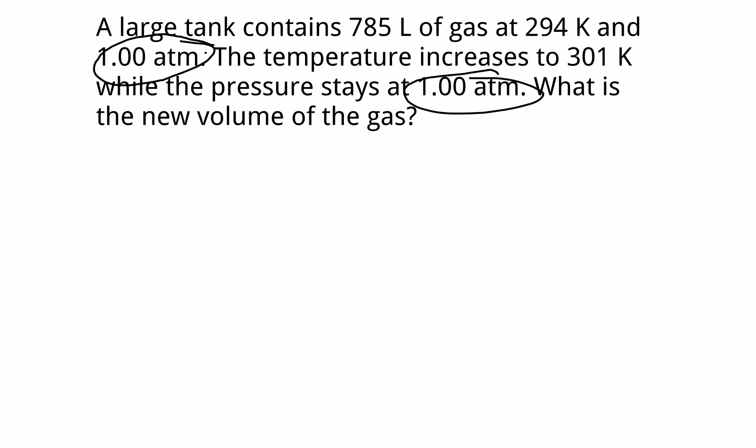What is the new volume of gas? So what you should notice here is that the atmosphere is 1 atm and 1 atm, and so those are going to cancel. They're being held constant. So what I really have is a V1,